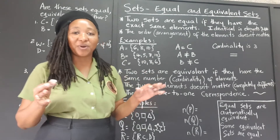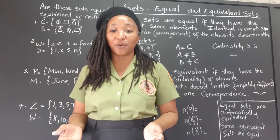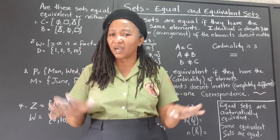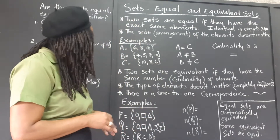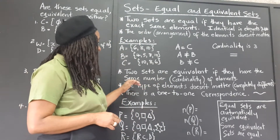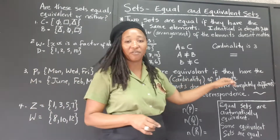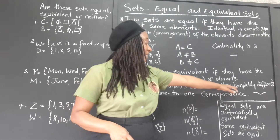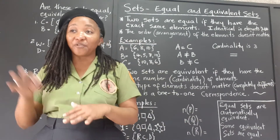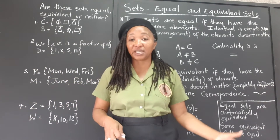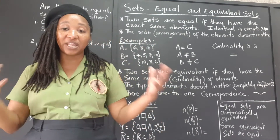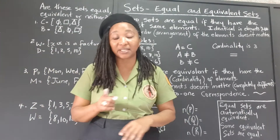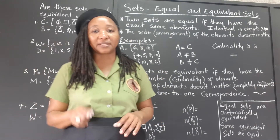Now let's look at equivalent sets. As used in the general language, equivalent means almost the same — round about the same but there are some differences. So two sets are equivalent if they have the same number or cardinality of elements. The type of elements doesn't matter. The elements can be completely different — one set might have numbers, another set might have letters, another set might have objects or names of people. The important thing for equivalent sets is the cardinality.